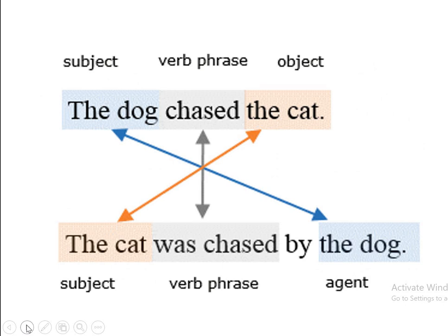Let us take a subject, verb phrase, object. 'The cat was chased by the dog.' Now this sentence and the sentence 'The dog chased the cat' are two different sentences having the same meaning. In the first sentence, we have the subject, then the verb phrase and the object. In the second sentence, we have the subject, the verb phrase and the agent. So here we understand how an active sentence can become a passive sentence.